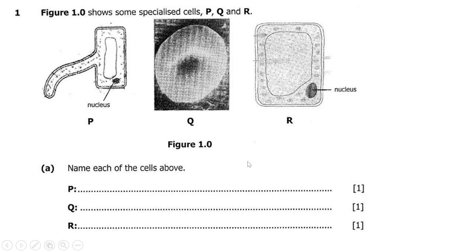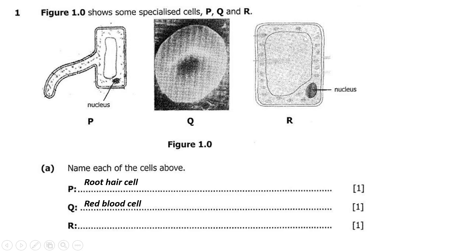Without further ado, let's go straight into the revision. Question one shows some specialized cells P, Q, and R. Part A says name each of the cells above. According to cell specialization, cell P is known as root hair cell, cell Q is known as red blood cell, and cell R is known as the palisade cell.